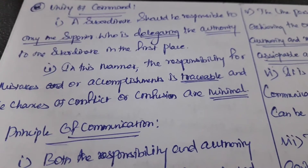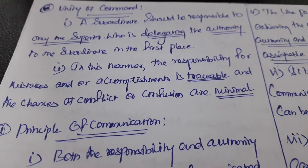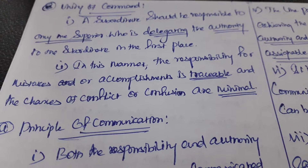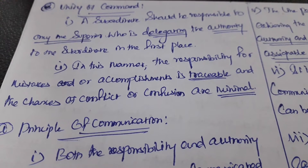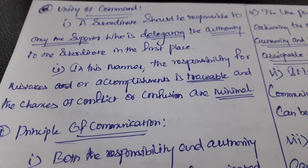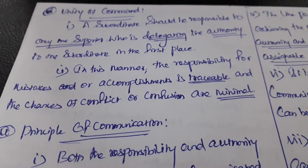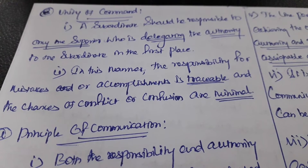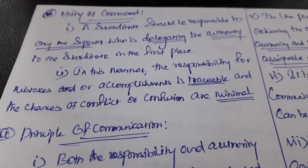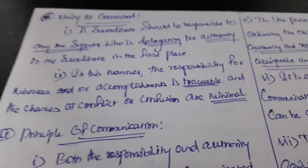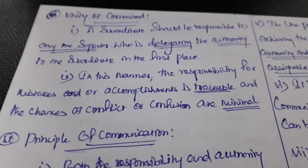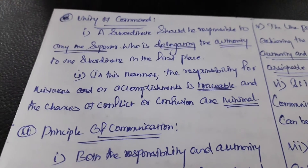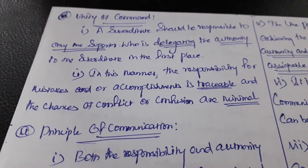In this manner, the responsibility for mistakes or accomplishments is traceable and the chances of conflict or confusion are minimal. If we follow this unity of command, we can find out mistakes and accomplishments easily and trace them, which helps minimize confusion and conflict in the organization.